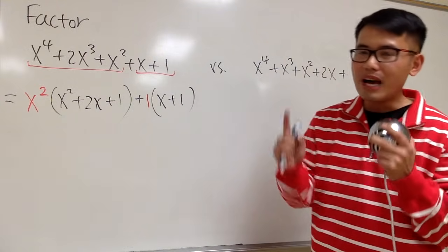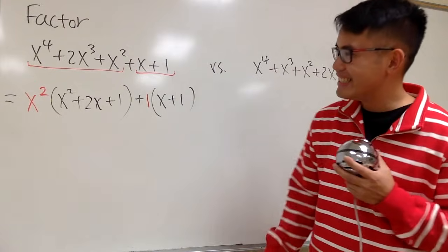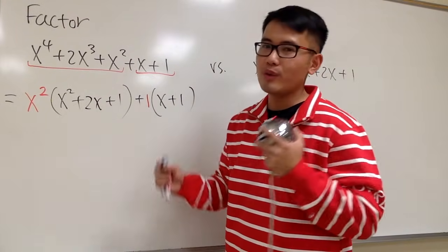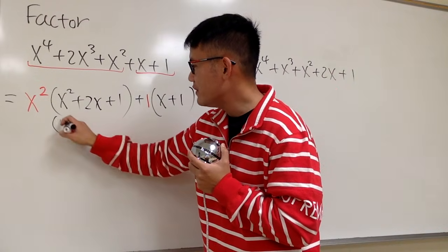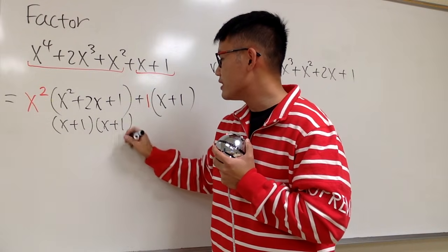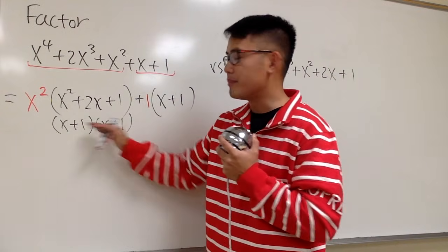However, as I told you guys earlier, these questions are well-designed. Look at this right here. x squared plus 2x plus 1. What can we do with it? Well, we can factor this, and this is going to give us x plus 1 times x plus 1. Now, I know this is the same as x plus 1 squared, but it would be better for me to write them down separately, like this for now.